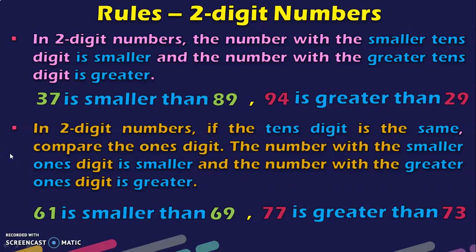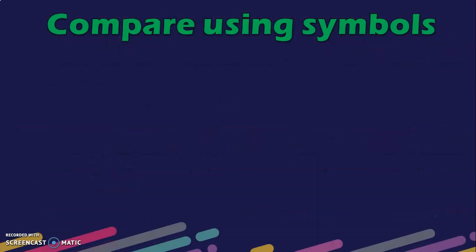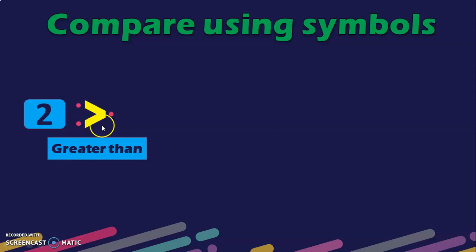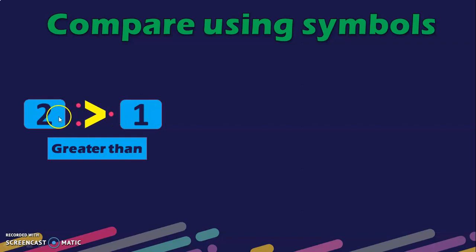I just wanted to do a quick revision of this before we go into 3-digit numbers. Let us also look at the usage of symbols. This is the greater than symbol. In this symbol you have 2 points on the left side and 1 point on the right side. Since we read from left to right, and 2 is always greater than 1, this is the symbol for greater than.